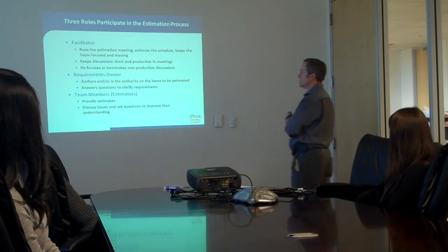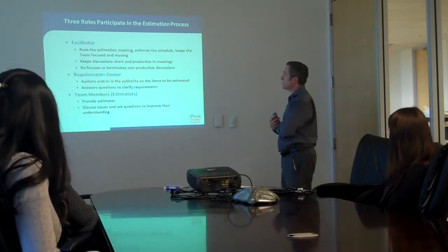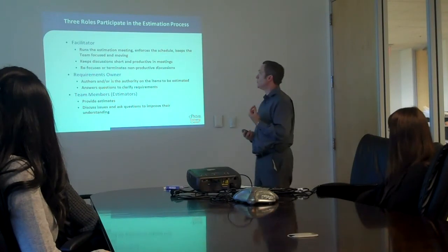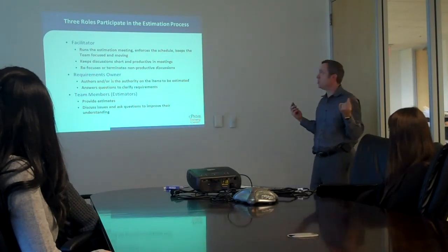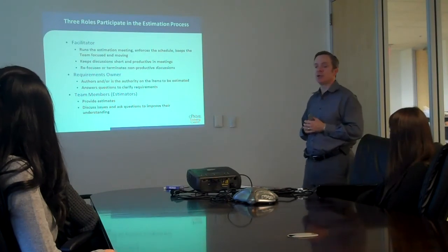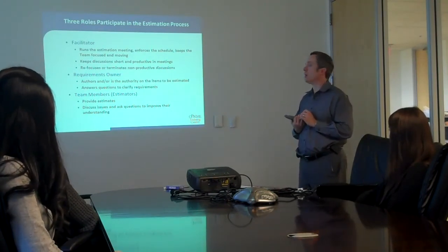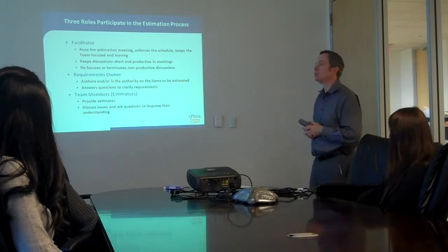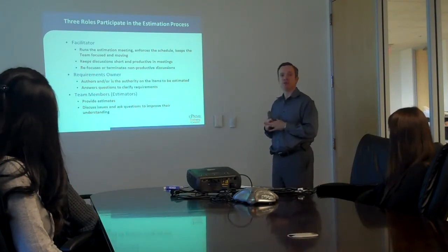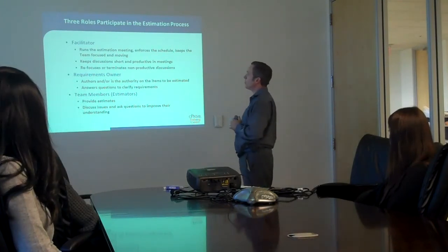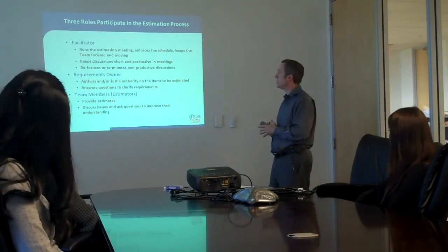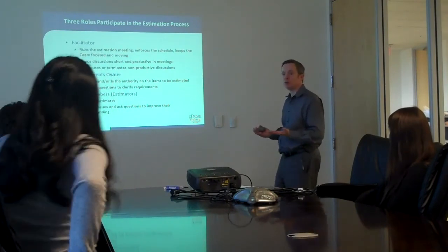Now let's talk about what happens in an estimation session as we move toward actually doing this. Within an estimation session using planning poker, there are three roles. The first is the facilitator, who runs the meeting, enforces the schedule, keeps people moving and focused, keeps discussions productive and short, focused on the subject matter, and cuts off interesting sidelines — like the latest football game or anything like that. It's good to keep things lively, but we don't want those things to consume our estimation session. The second role is the requirements owner — in Scrum we call that the product owner; other methodologies use names like business analyst.